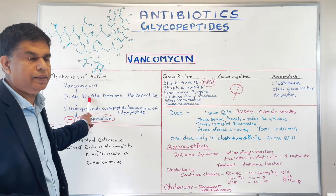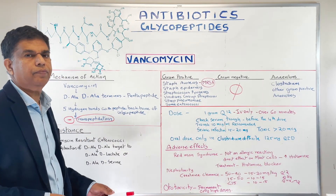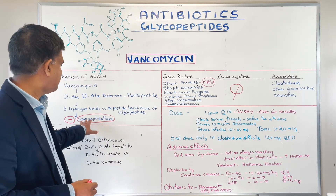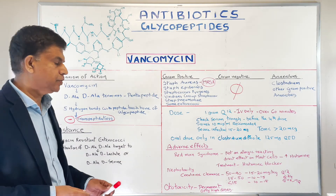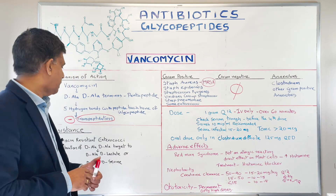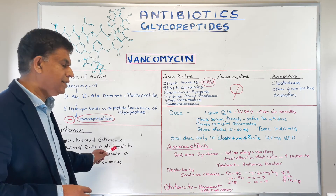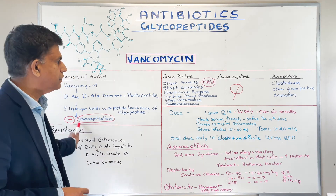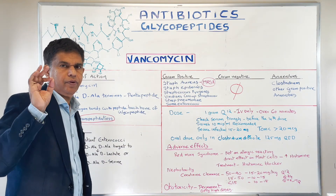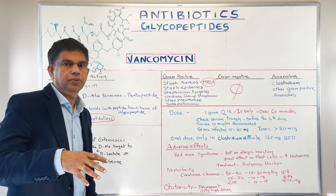Vancomycin belongs to the glycopeptides class. Mechanism of action: it binds the D-alanine D-alanine terminal part, creates five hydrogen bonds with the peptide backbone, and prevents transpeptidation, affecting the bacterial cell wall. Resistance: bacteria alter D-alanine D-alanine to D-alanine D-lactate or D-alanine D-serine — this is VRE. Spectrum: only gram-positive coverage; MRSA is the key organism. Not gram-negative because vancomycin is too big to pass through gram-negative pores.